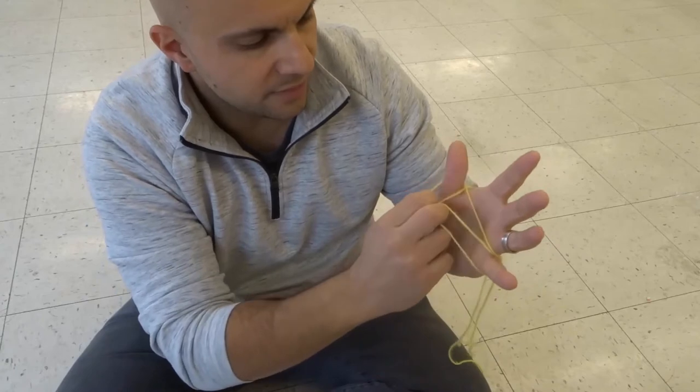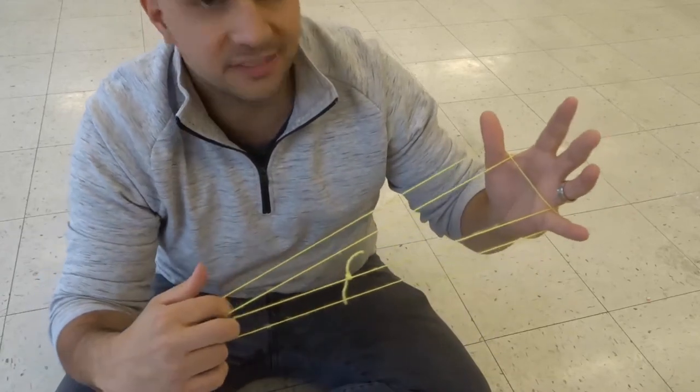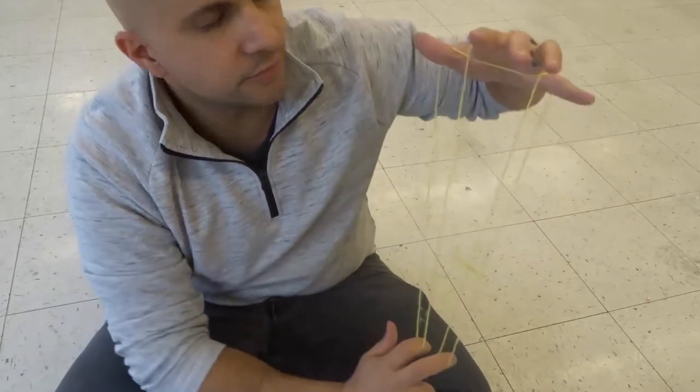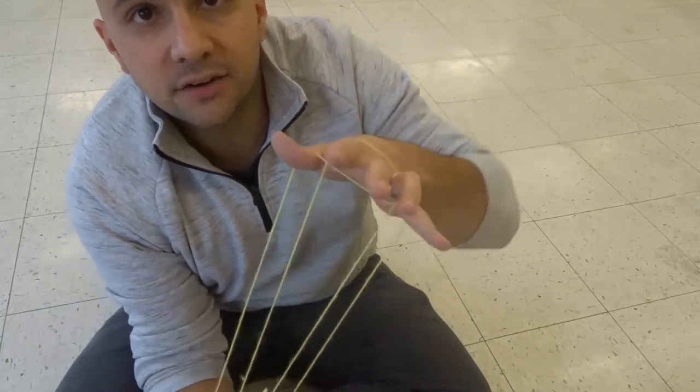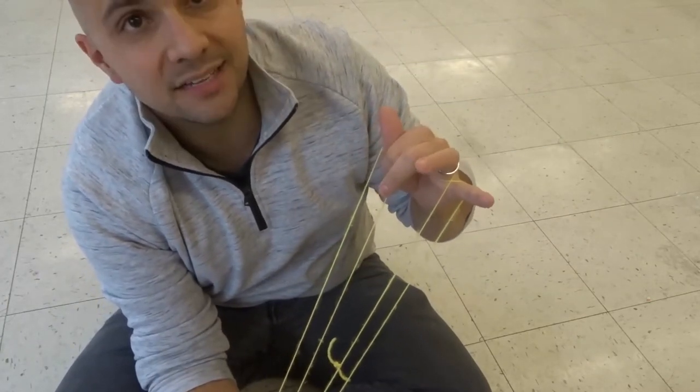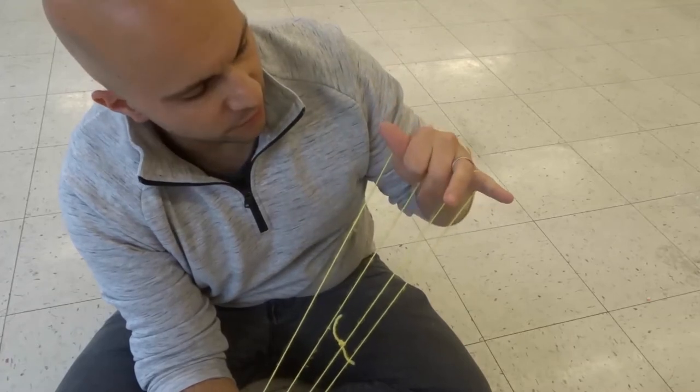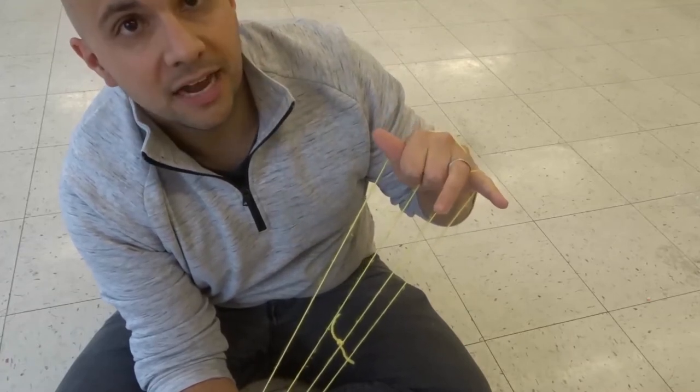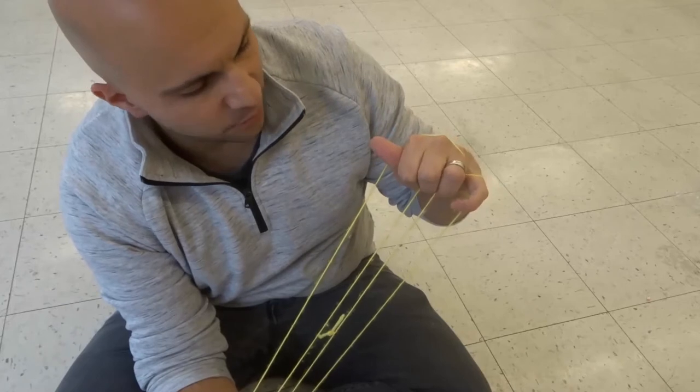Okay we're gonna take the pinky loop and the thumb loop and we're gonna pull them out nice and tightly. Okay now what we're gonna do is we're gonna look at it like this and you can see there are various gaps. So I'm gonna take my index finger press it down into this gap over here. My middle finger goes in the large gap in the middle and then my ring finger goes into this gap over here.